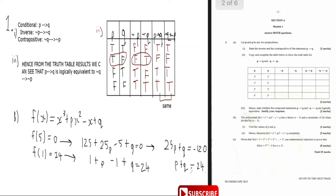Subtracting the two equations: 25p - p = 24p, and -120 - 24 = -144. So 24p = -144, therefore p = -144 ÷ 24, which gives p = -6.